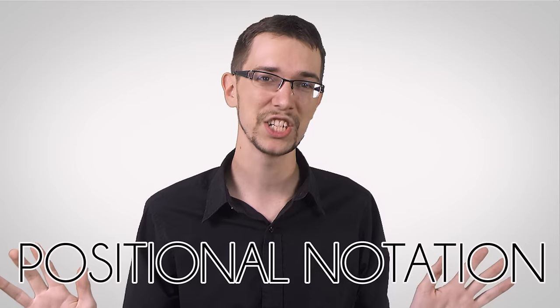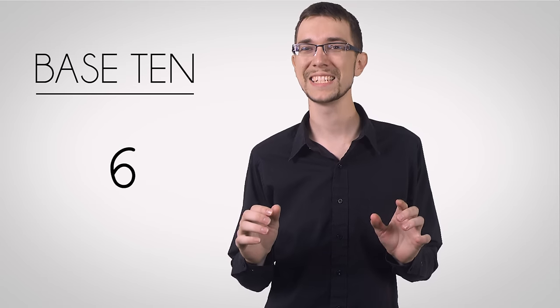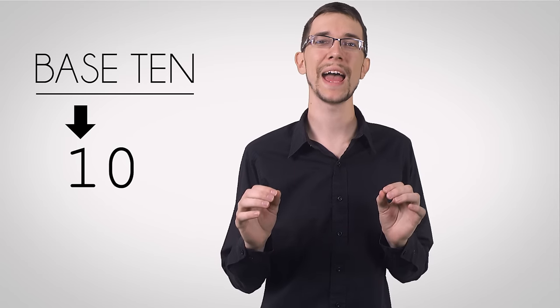Now, we could just keep adding symbols at this point, but that would get out of hand very quickly. Can you imagine having to memorize a specific symbol for every single number? That's ridiculous. And that's why we reuse the same symbols over and over again in a very clever system called positional notation. So, in the base 10 system, as soon as we get to 10, or an exponent of 10, we need to add another digit to the left of our current digit.